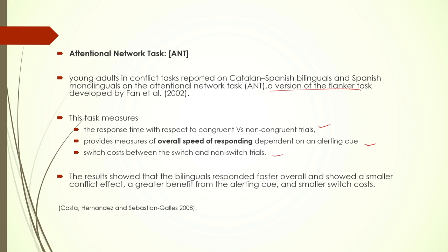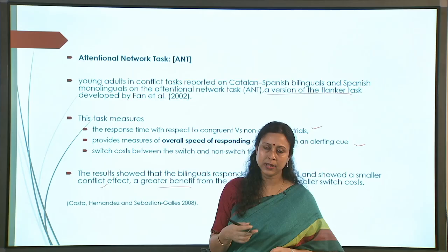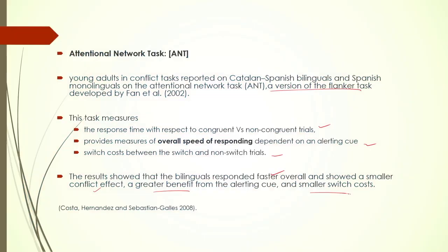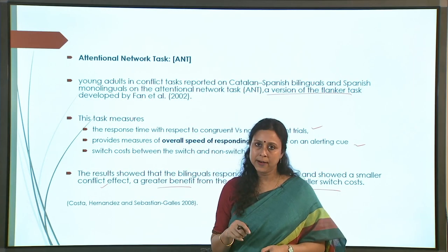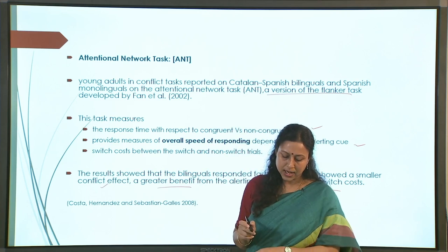When ANT was employed on monolingual versus bilingual participants, bilinguals did better at every level. Their overall reaction time was faster. They showed a smaller conflict effect. They also had greater benefit from the alerting cue - monolinguals were much slower at picking up the cue compared to bilinguals, who were much more alert and could react more quickly to the target. Bilinguals also showed smaller switch costs. Bilinguals did better than monolinguals on every single parameter of the ANT task.